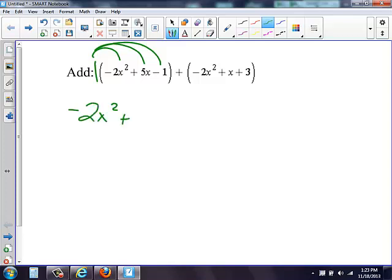One times five x is five x. One times negative one is negative one. So all I really did was rewrite this whole polynomial without my parentheses. I didn't have to do anything.